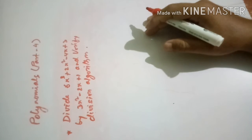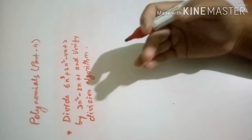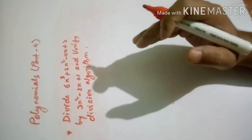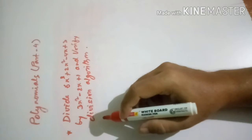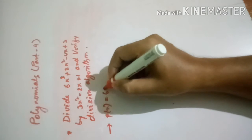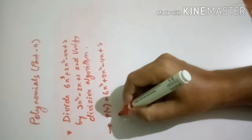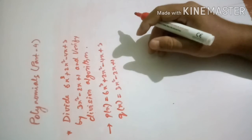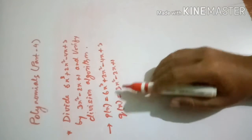Why is the division algorithm given here? To verify whether the division is correct or not. When we perform the division we get the quotient and remainder. After getting the quotient and remainder, we can check our answer using the division algorithm. So now, let p(x) = 6x³ + 2x² − 4x + 3, and q(x) = 3x² − 2x + 1.